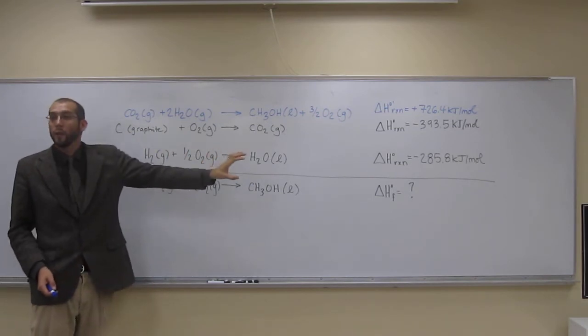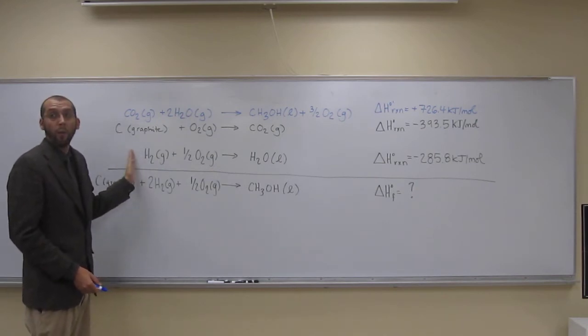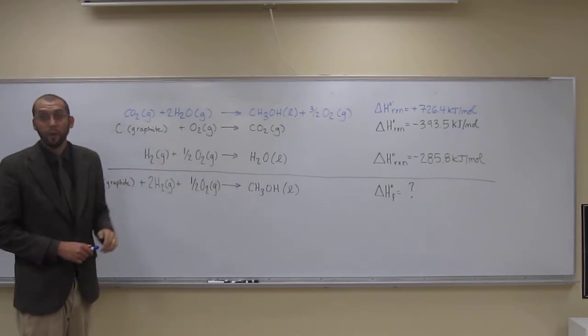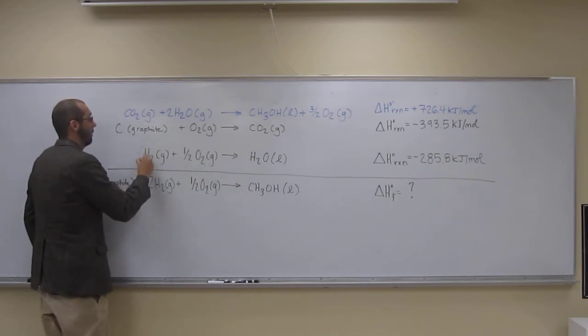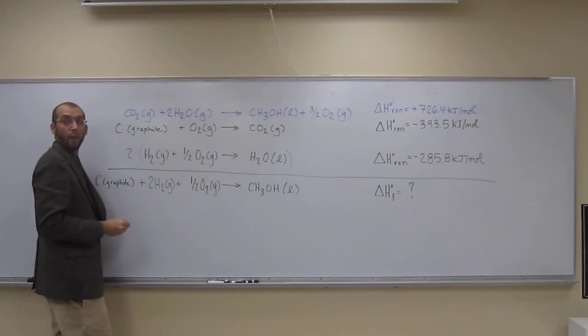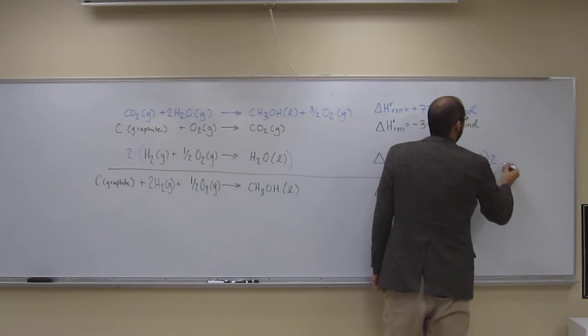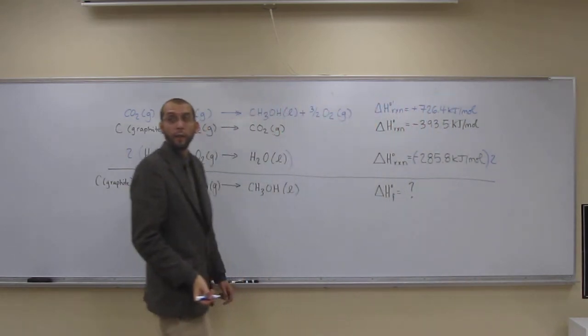So what are we going to have to do? We're going to have to multiply this equation by 2. These are just like algebraic equations, so what you do to one thing in the equation, you've got to do to everything. So if we take this and multiply it by 2, we've also got to take this over here and multiply it by 2.